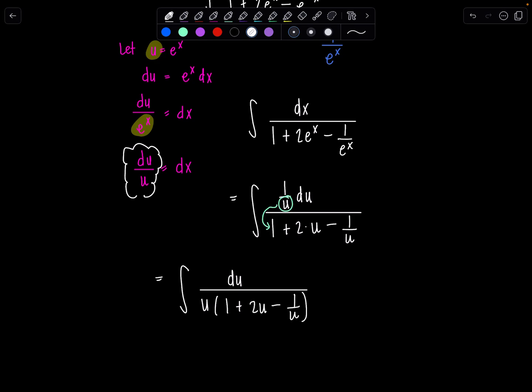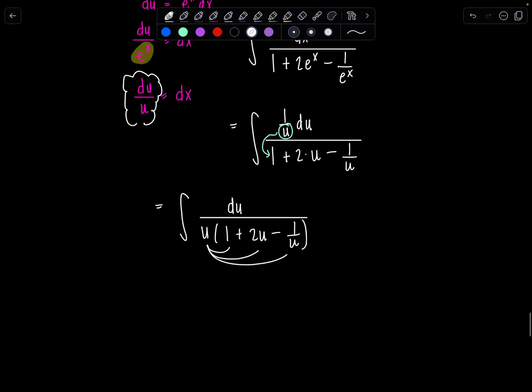then you have 1 plus 2u minus 1 over u. And then if I just run that through, no more complex fraction. So du over u plus 2u squared minus 1. Beautiful.